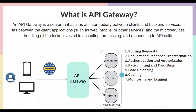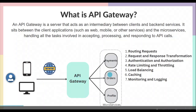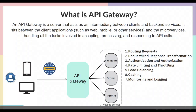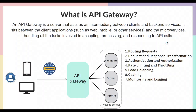The main functions of an API Gateway are: first, routing the request to the appropriate backend service; request and response transformation — it can transform the request before sending it to the service, or transform the response before sending it to the client; authentication and authorization — it can block requests from users who don't have access; rate limiting and throttling to limit requests from a particular client; load balancing; caching — instead of fetching the result each time, it can cache and return it faster; and monitoring and logging.